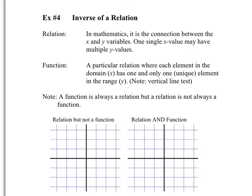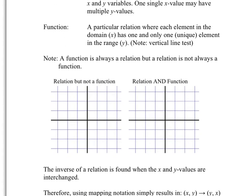A function is always a relationship because it's a relationship between x and y. But not every relationship is a function. For example, looking at a graph, if x equals 1 has three different values of y, that is not a function — but it is still a relation between x and y.